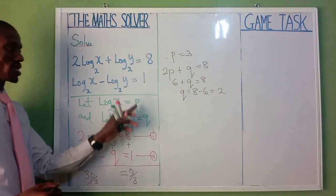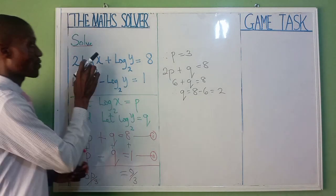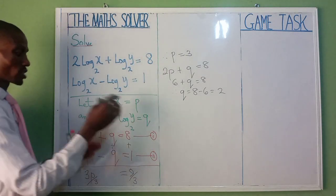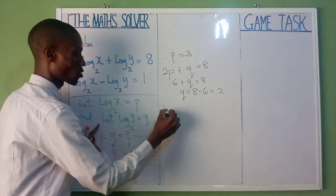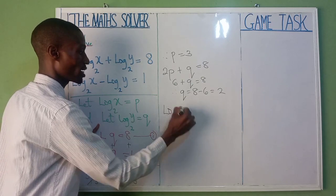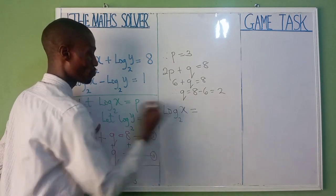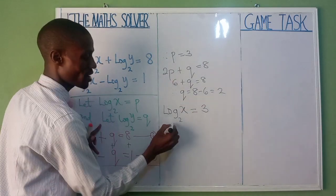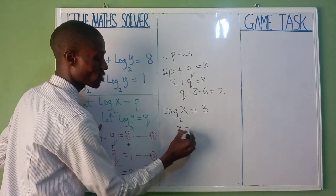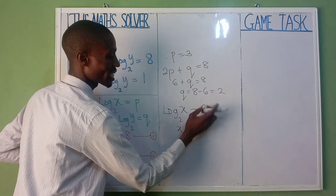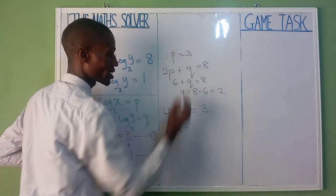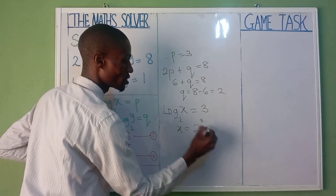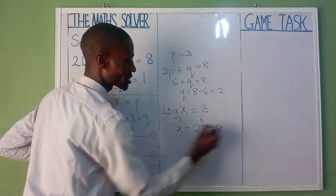We have gotten our p and q, but we are not through, because our question is in form of x and y. So let's now return it back. We said log 2x equal to p. And our p is 3. Therefore, x is now going to be, you bring it here, and this 3 will return to power. So it's 2 raised to power of 3, which is 8. That's our x.